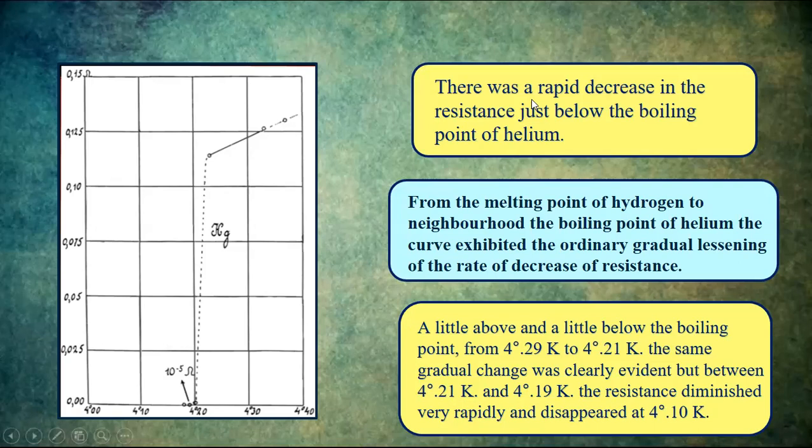This is the original graph which was recorded by the experiment. It was seen that there is a rapid decrease in the resistance just below the boiling point of helium. Also, from the melting point of hydrogen to the neighborhood of the boiling point of helium, the curve exhibited the ordinary gradual lessening of rate of decrease of resistance.